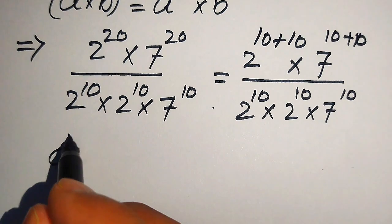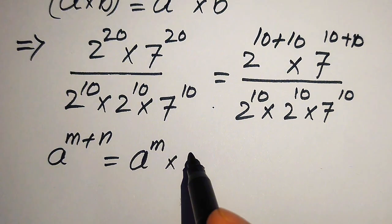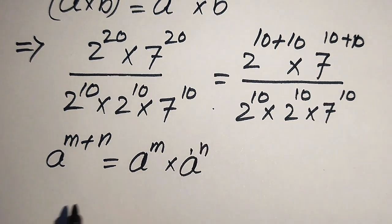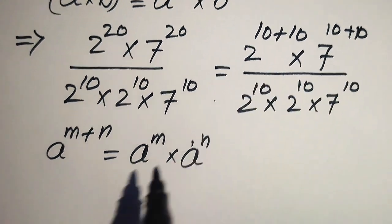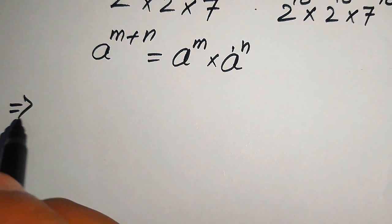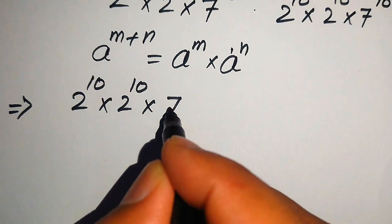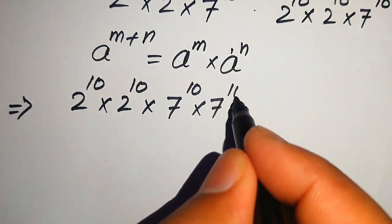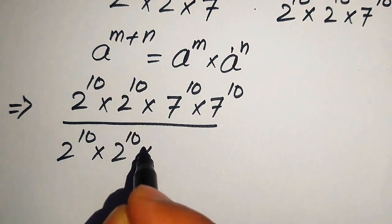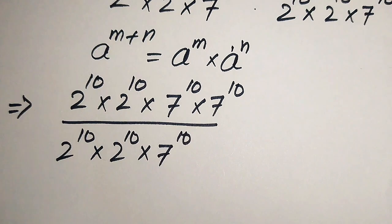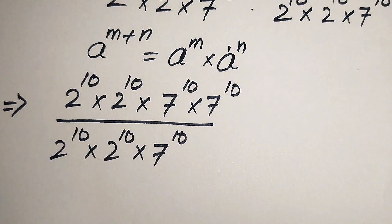We apply the exponent law: a^(m+n) = a^m × a^n. Breaking these exponents gives us the numerator as 2^10 × 2^10 × 7^10 × 7^10, divided by 2^10 × 2^10 × 7^10. I'm showing all these steps in detail for students who may not be able to do them mentally.